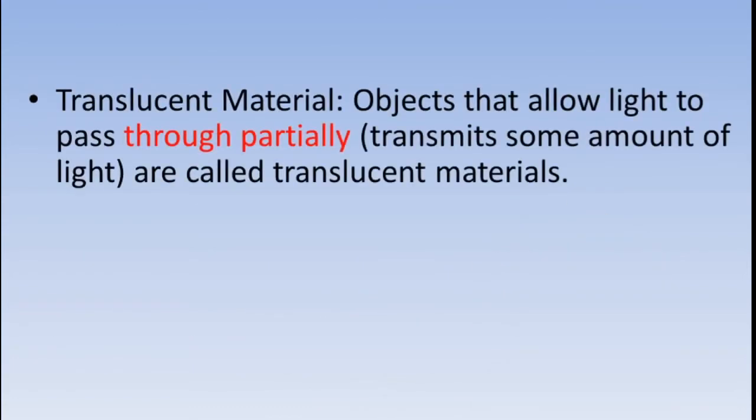Translucent material: objects that allow light to pass through partially, or transmit only some amount of light, are called translucent materials.